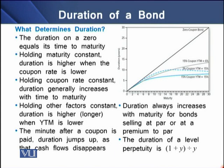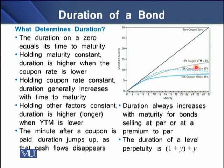Now, what determines duration? There are certain rules shown in the diagram on the upper right of the screen. The first rule is that the duration of a zero coupon bond equals its time to maturity. Holding maturity constant, duration is higher when the coupon rate is lower — as seen comparing the bond with a 15% coupon rate and the bond with a 3% coupon rate. Holding coupon rate constant, duration generally increases with time to maturity.